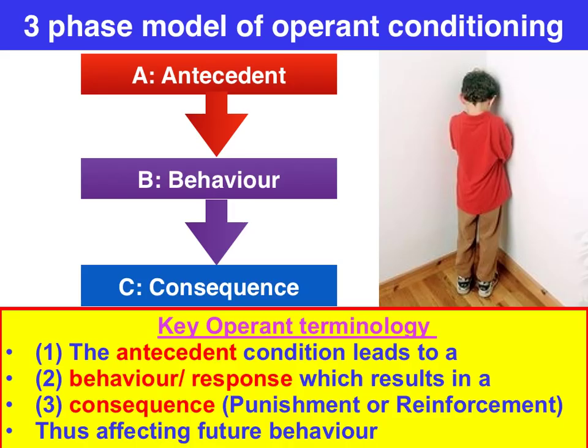Skinner devised the ABC three-phase model of operant conditioning. An antecedent is an event that precedes behaviour, and importantly there is choice here. We make our choice — that is our behaviour — and this behaviour will have a consequence. I'll give you a couple of examples to illustrate what we are talking about.